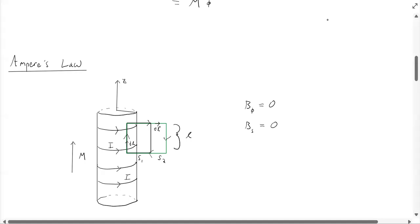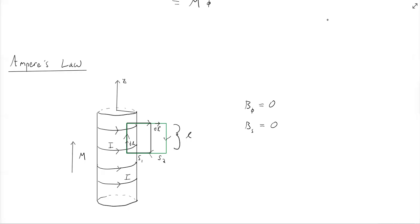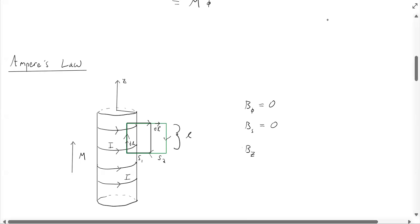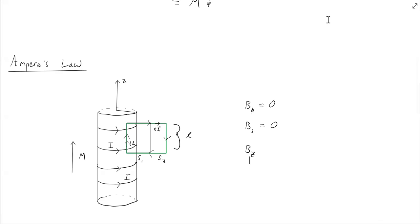Thinking about this problem: if we were to flip the direction of the current, this would imply flipping the B field. But we can achieve flipping the current by flipping the solenoid upside down, which changes the current direction — but that doesn't logically mean the B field's component direction will change. So there can be no radial component for our magnetic field. The only component left is B_Z, and we'll find that using Ampere's law.